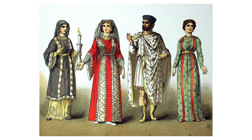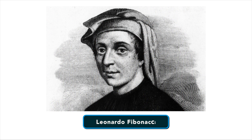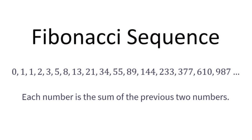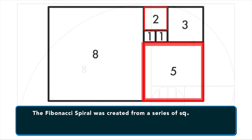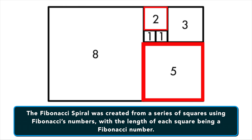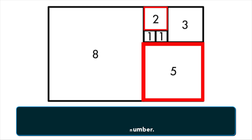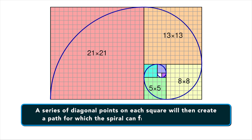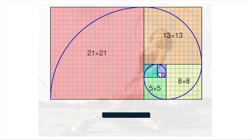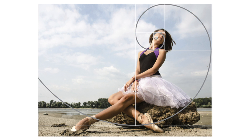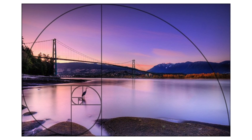It is said that sometime around the 12th century AD, a mathematician named Leonardo Fibonacci devised a series of numbers that will produce an aesthetically pleasing composition, known as the Fibonacci Spiral. The Fibonacci Spiral was created from a series of squares using Fibonacci's numbers, with the length of each square being a Fibonacci number. A series of diagonal points on each square will then create a path for which the spiral can flow through the frame, leading the viewer around the image in a natural flow.